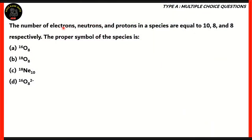The number of electrons, neutrons, and protons in a species are equal to 10, 8, and 8 respectively. The proper symbol of the species is: option A) 16-O-8, option B) 18-O-8, option C) 18-Ne-10, option D) 16-O-8 with charge 2-. Which of these becomes the correct option?